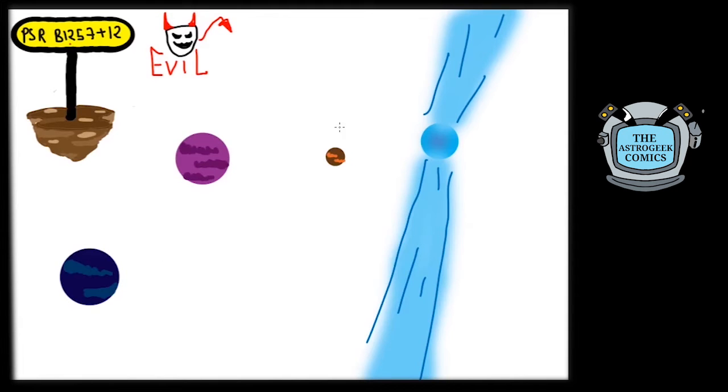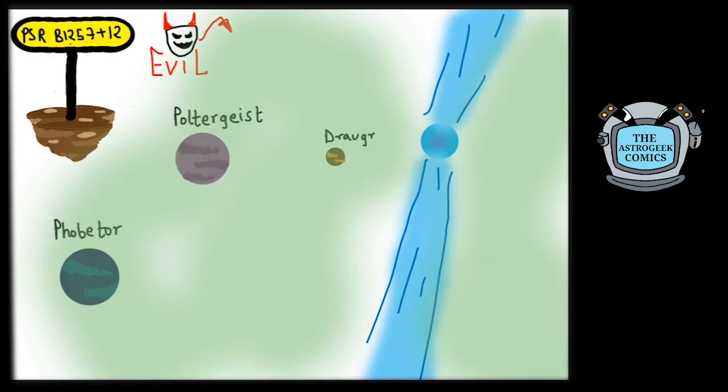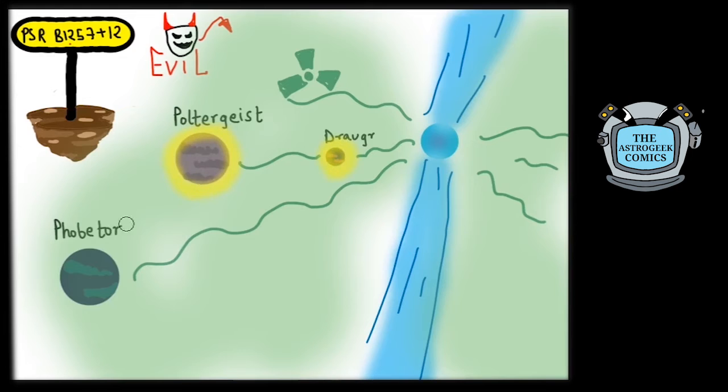These planets, starting from the closest, are named Draugr, Poltergeist, and Phobetor after demons. And correctly so, since these worlds were not even thought to be possible to exist in the extremely radiation-filled environment around the pulsar. The magnetic field of a pulsar is enough to even rip your molecules apart.